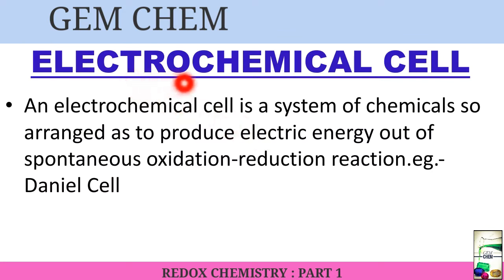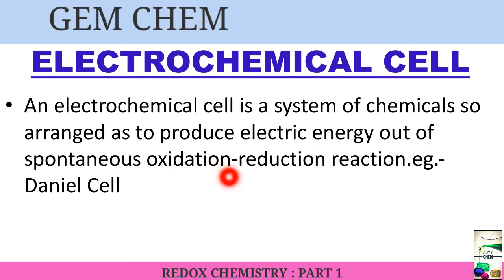What do we mean by an electrochemical cell? An electrochemical cell is a system of chemicals arranged to produce electric energy out of a spontaneous oxidation-reduction reaction. It is a cell that converts chemical energy to electrical energy, and this chemical energy is obtained using a redox reaction, which is actually an oxidation plus reduction reaction.